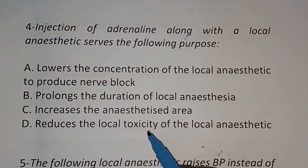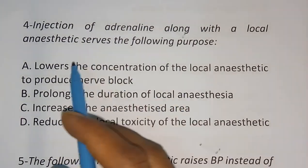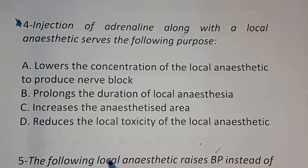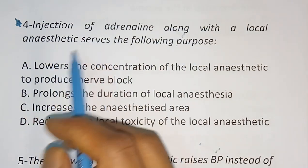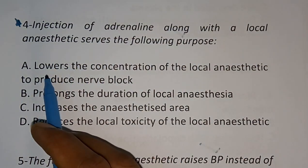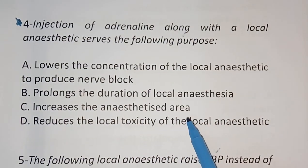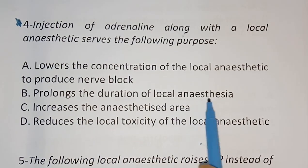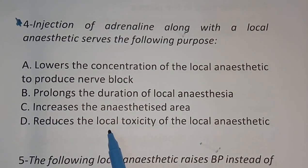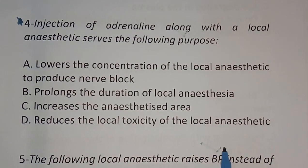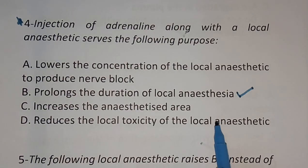Question 4: Injection of adrenalin along with the local anesthetic serves what purpose? This is an important, repeatedly asked question. Options: (A) lowers the concentration of local anesthetic needed to produce nerve block, (B) prolongs the duration of local anesthetic, (C) increases the anesthetized area, (D) reduces the local toxicity. The correct answer is option B — prolongs the duration of local anesthetic.